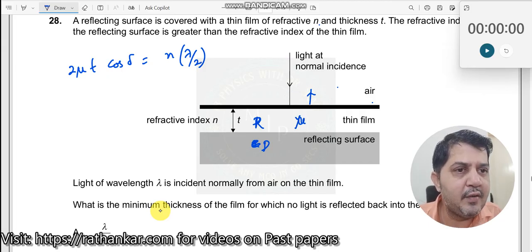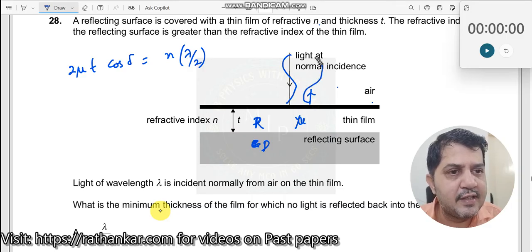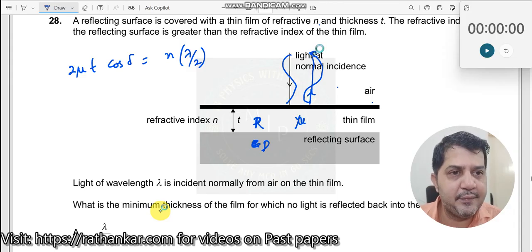What is destructive interference? When a ray of light comes like this and the one reflected from here goes like this, if they get reflected back and there should not be any light being observed, that is what we call destructive interference.